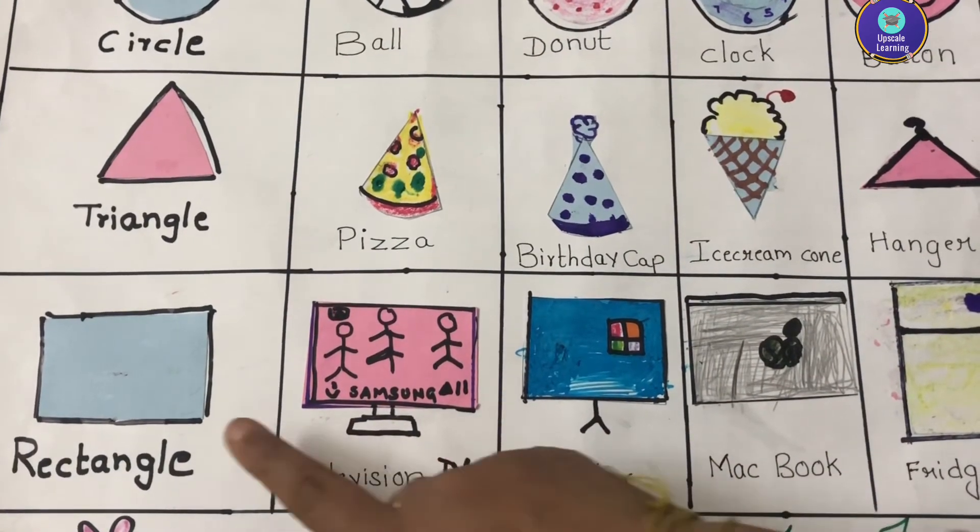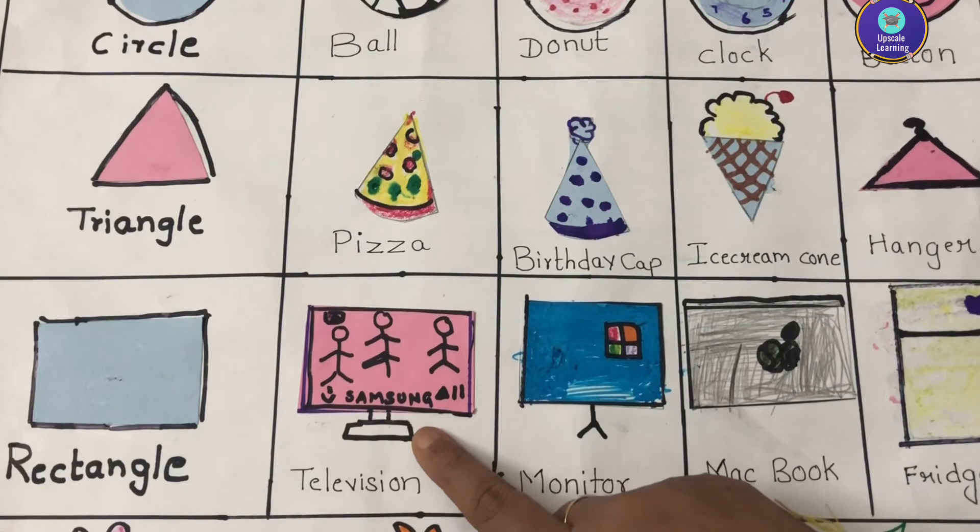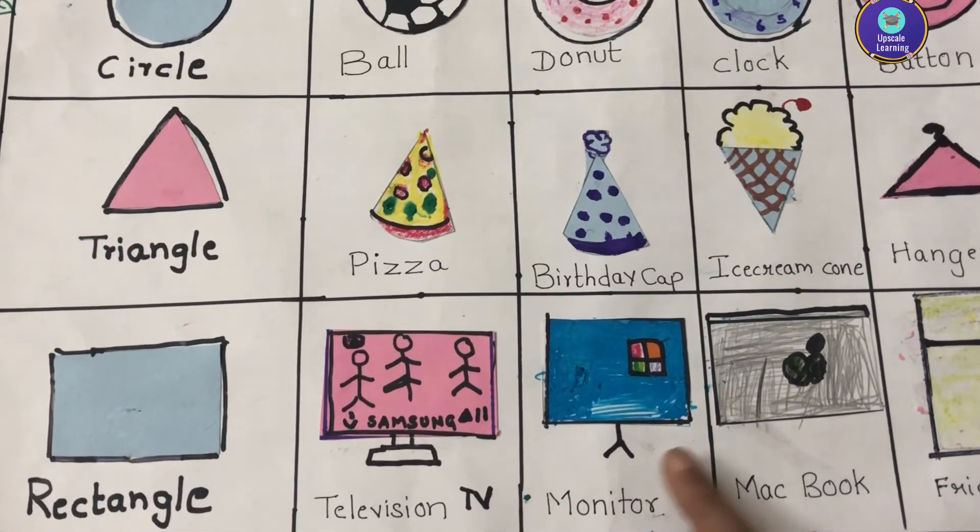In rectangle we have TV, monitor, macbook and fridge.